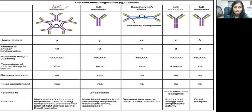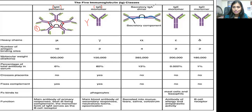When it comes to structural differences, IgM is the only antibody which has a pentameric structure — it contains five antibodies. IgG is monomeric in structure; you can see here only a single Y-shaped antibody. IgA is dimeric in structure, which contains two antibodies. IgE is also a monomer, and IgD is also a monomer.